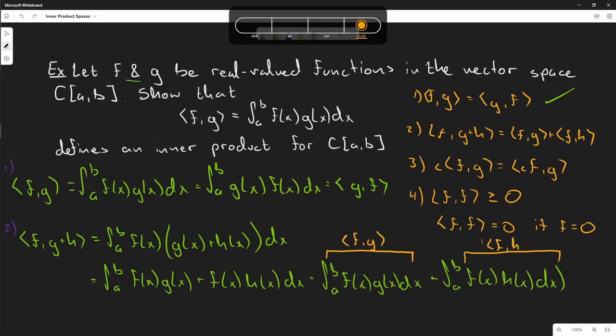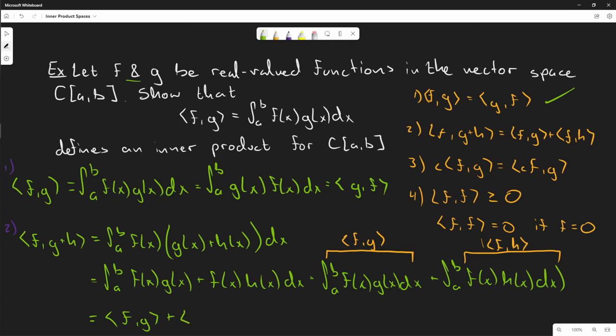We can see that this part is the inner product of f and g, and this is the inner product of f and h. So we showed this is the same as <f,g> + <f,h>, satisfying the second axiom.